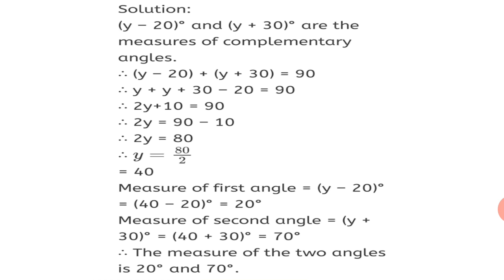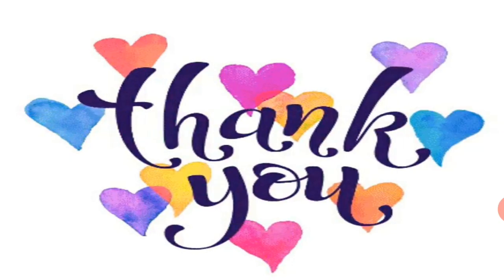Therefore, the measures of the two angles are 20 degrees and 70 degrees. As a check, 20 plus 70 equals 90 degrees, confirming these are complementary angles. This is how we solved Question 2. I hope you have understood the concept of complementary angles. Do practice more sums. Stay learning, keep safe, and thank you.